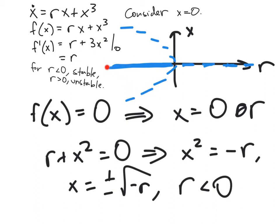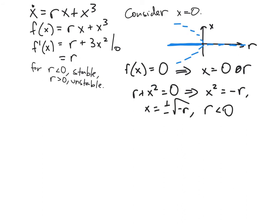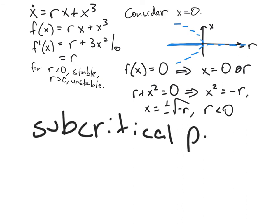So what happens? We're puttering along on the zero fixed point as r increases. When we go through the bifurcation, unlike in the supercritical pitchfork, we're now in what's called a subcritical pitchfork, and our nearby stable solutions have completely disappeared. It's really not clear where we're going to go if we perturb a little bit. This is the subcritical pitchfork.